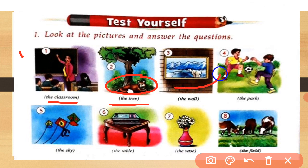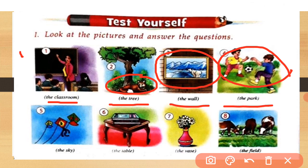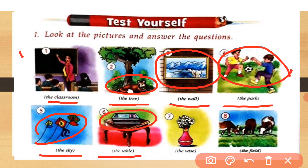In the third picture, where is the picture? It is on the wall. In the fourth picture, where are the boys? The boys are in the park. Number five: where are the kites? The kites are in the sky. Number six: where are the books? The books are on the table. Number seven: where are the flowers? The flowers are in the vase. Number eight: where are the cows? The cows are in the field.